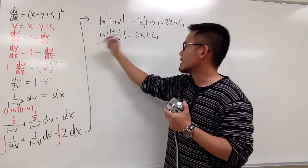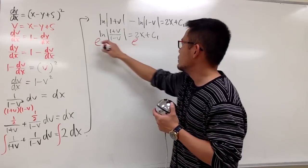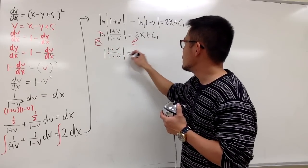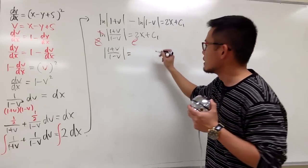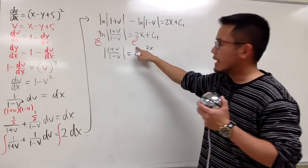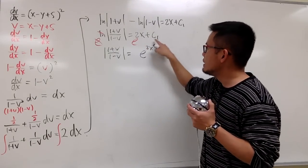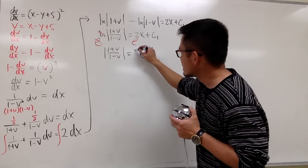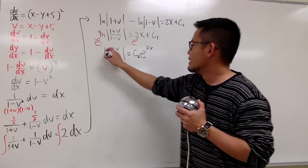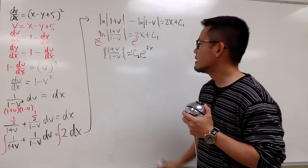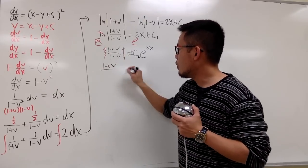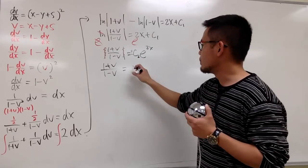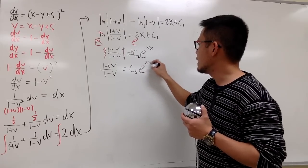Let's solve for v. Exponentiating both sides: the absolute value of (1 plus v)/(1 minus v) equals e^(2x) times e^(C₁). Since e^(C₁) is just another constant, call it C₂. Getting rid of the absolute value introduces a plus/minus, so (1 plus v)/(1 minus v) equals ±C₂ · e^(2x), which we call C₃ · e^(2x).